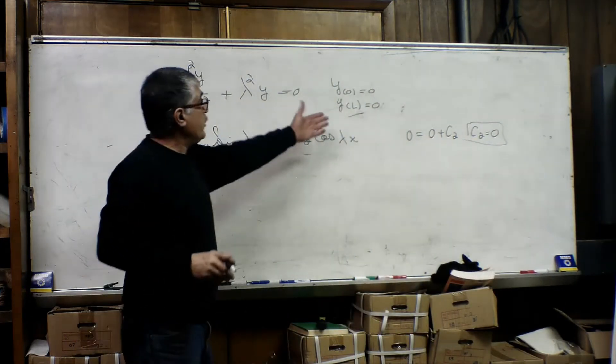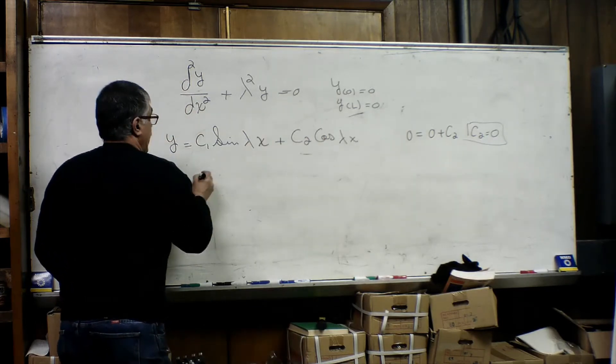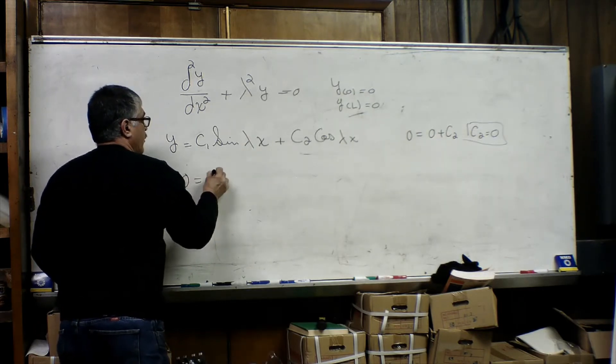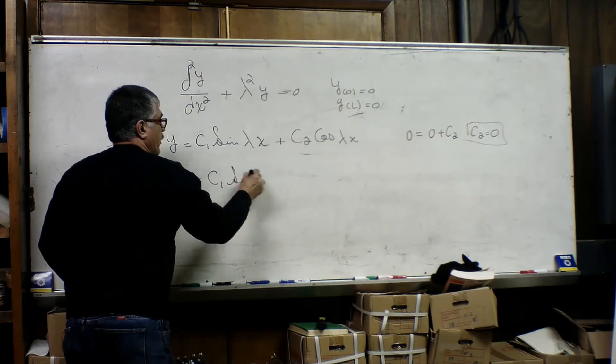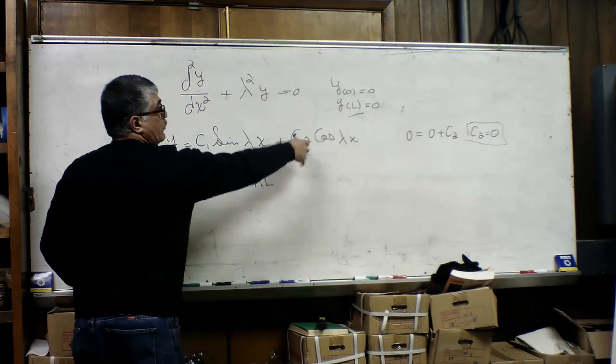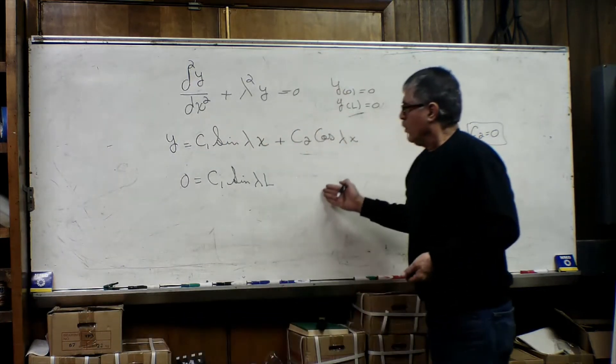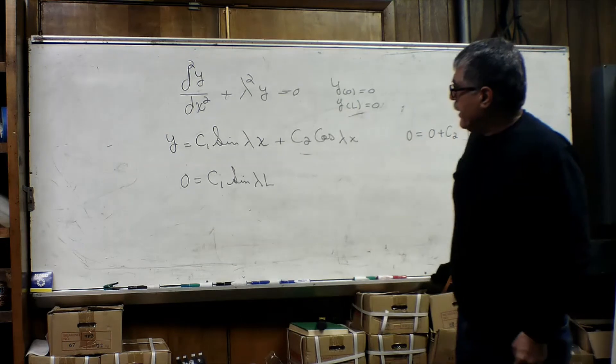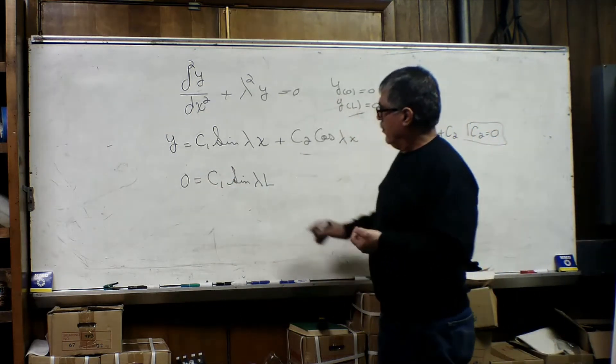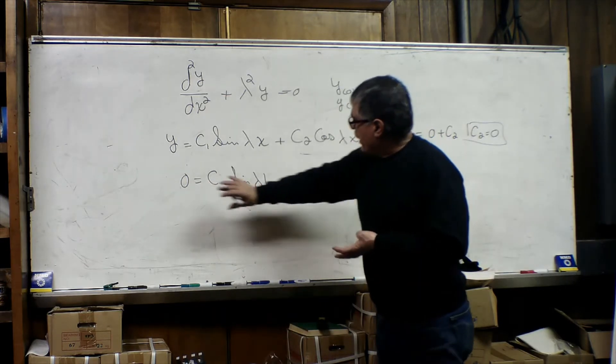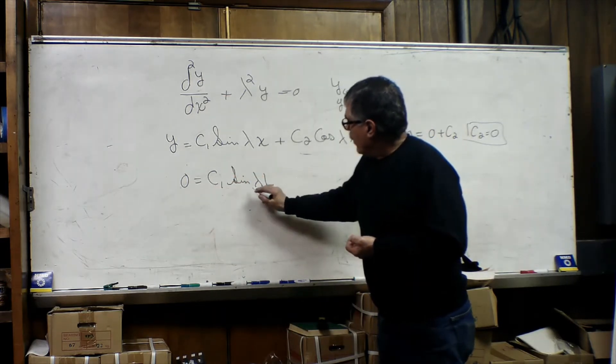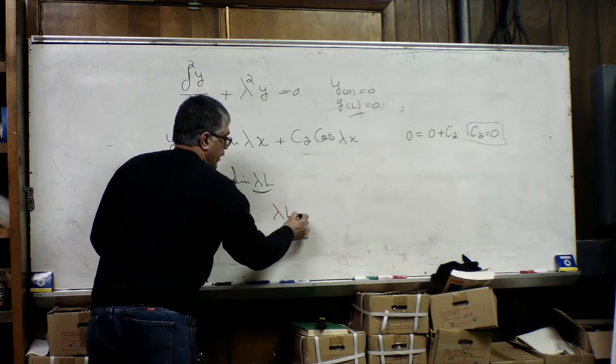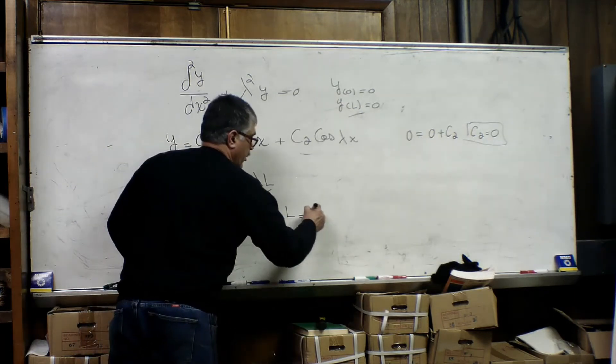And the second condition, y when x equals L is equal to 0. So y will be 0 when c1 sine of lambda L, and this portion c2 is already 0. For this statement to be true, we just have to use our common sense. How can we have 0? The only way we can have 0 is if lambda L equals n pi.